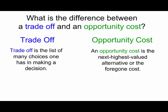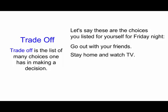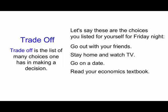Or the foregone cost. Let's say these are the choices you listed for yourself for Friday night: you go out with your friends, you stay at home and watch TV, you can go out on a date, you can read your economics textbook, or you can go camping with your parents. This list is what are called your trade-offs.